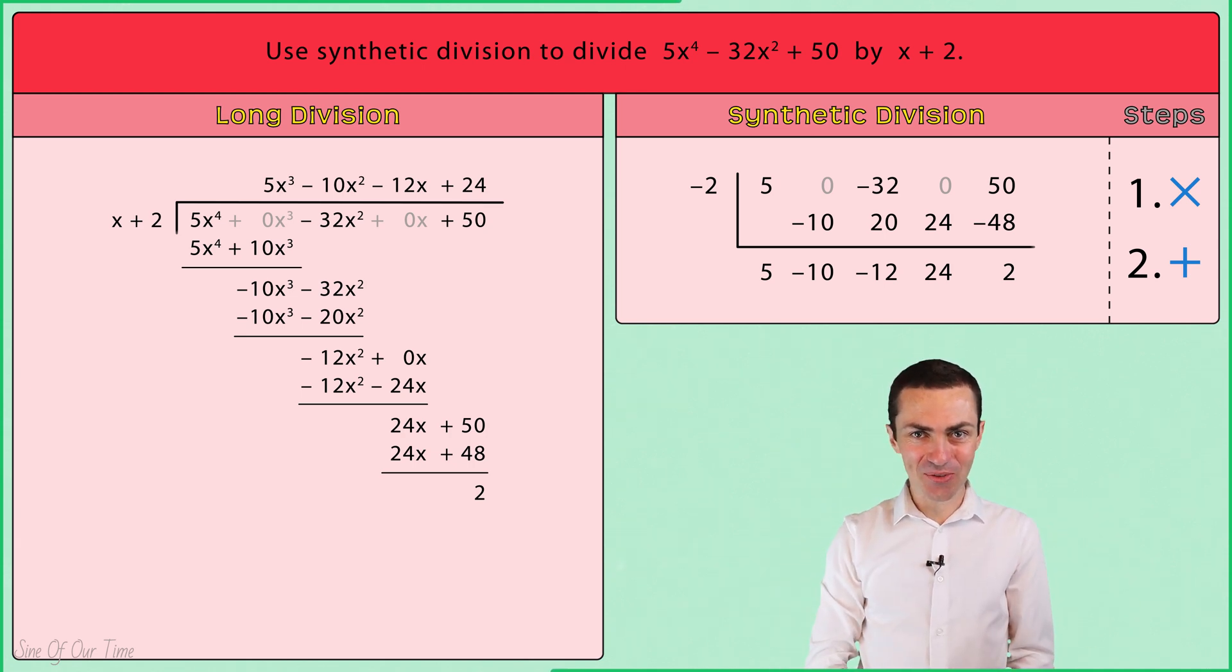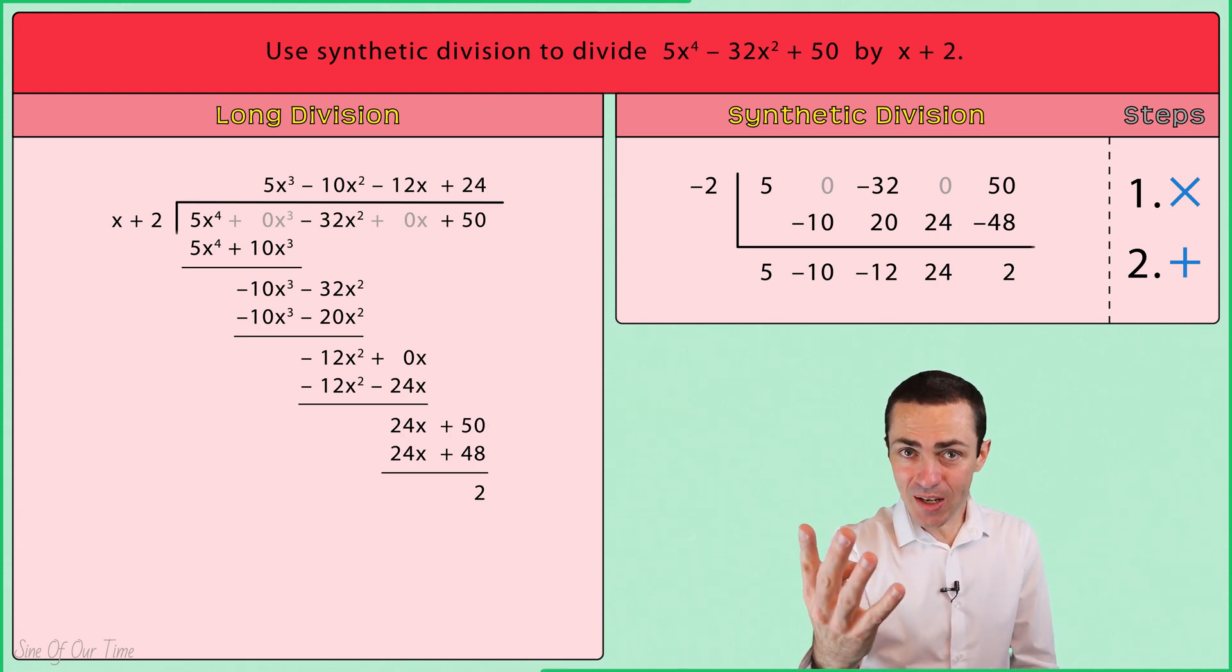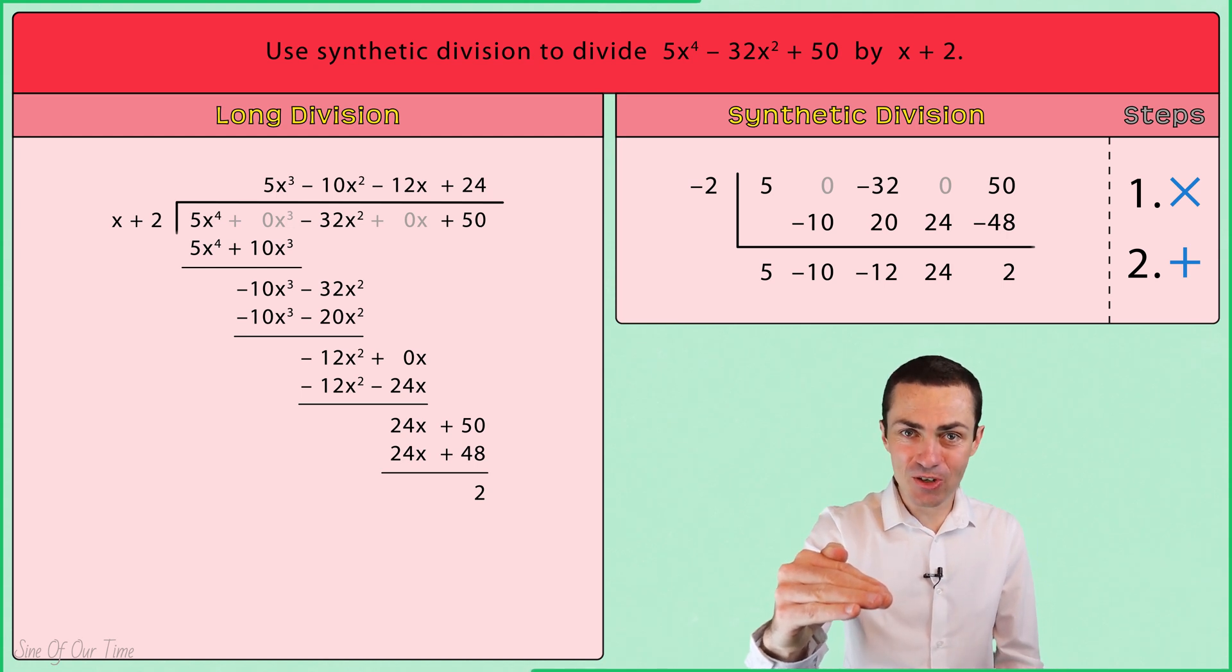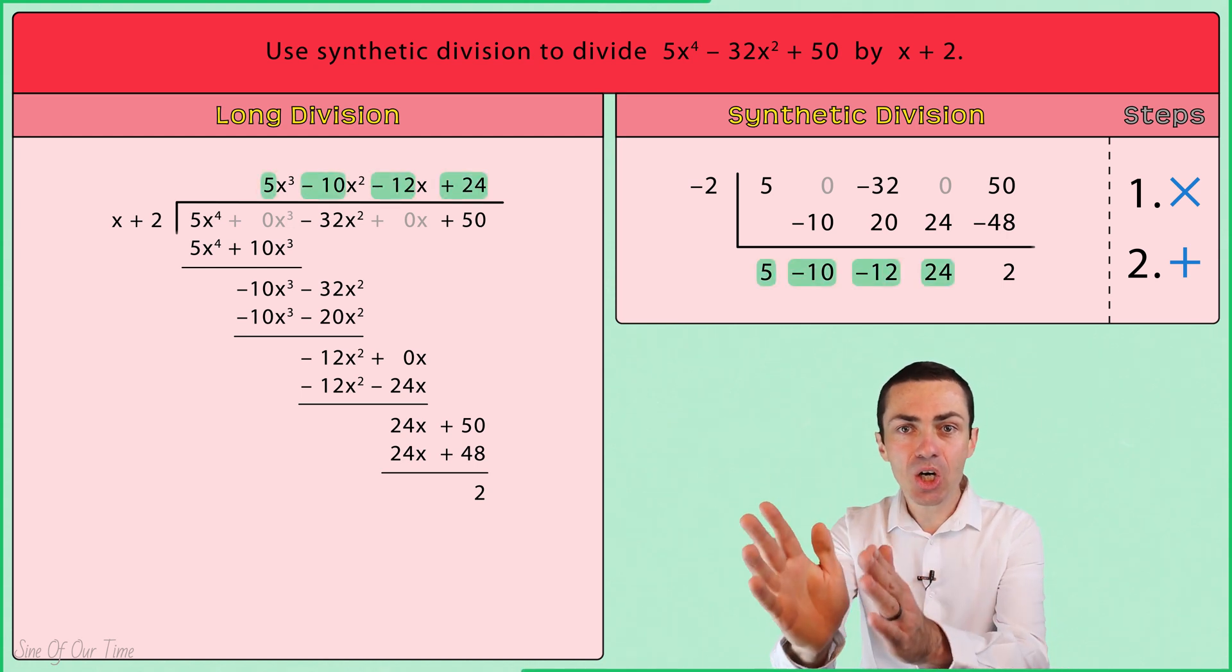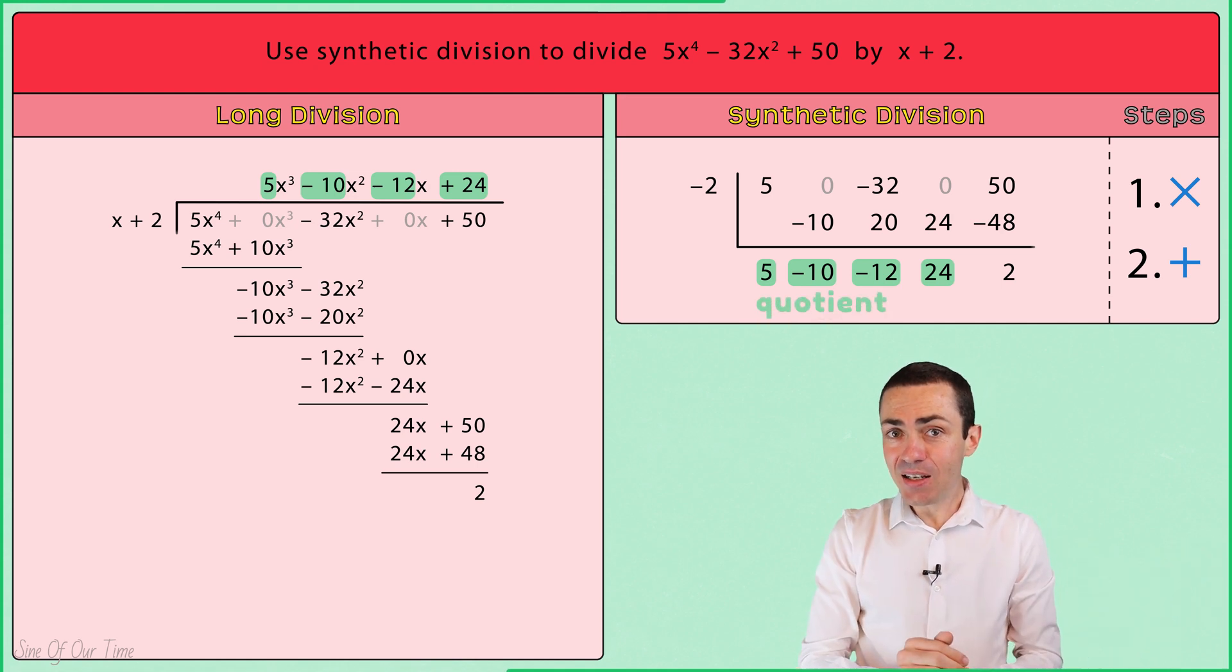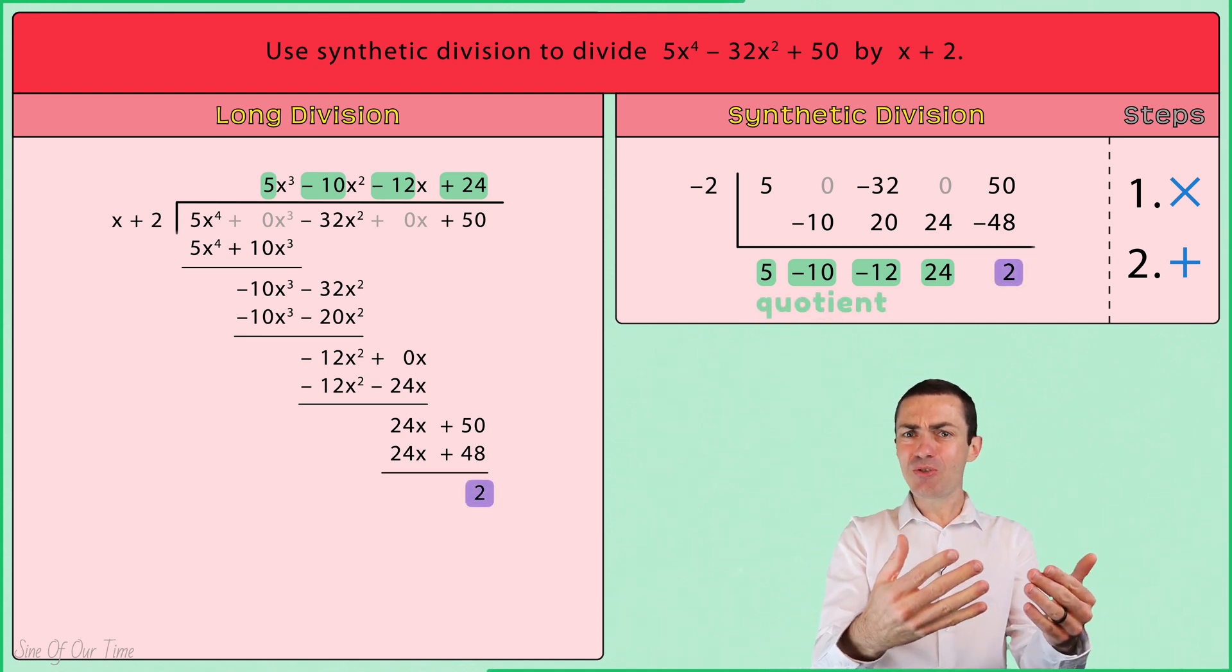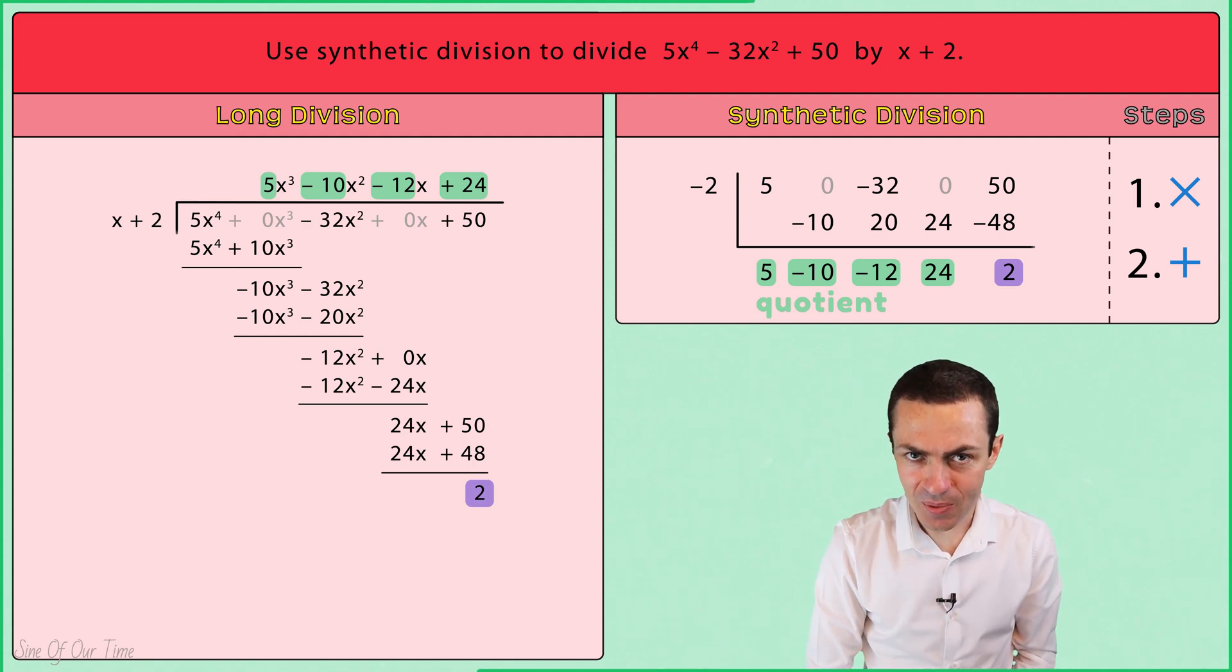That's all there is to synthetic division. The first four numbers at the bottom of the synthetic division symbol represent the coefficients of the quotient, while the last number always represents the remainder of the division.